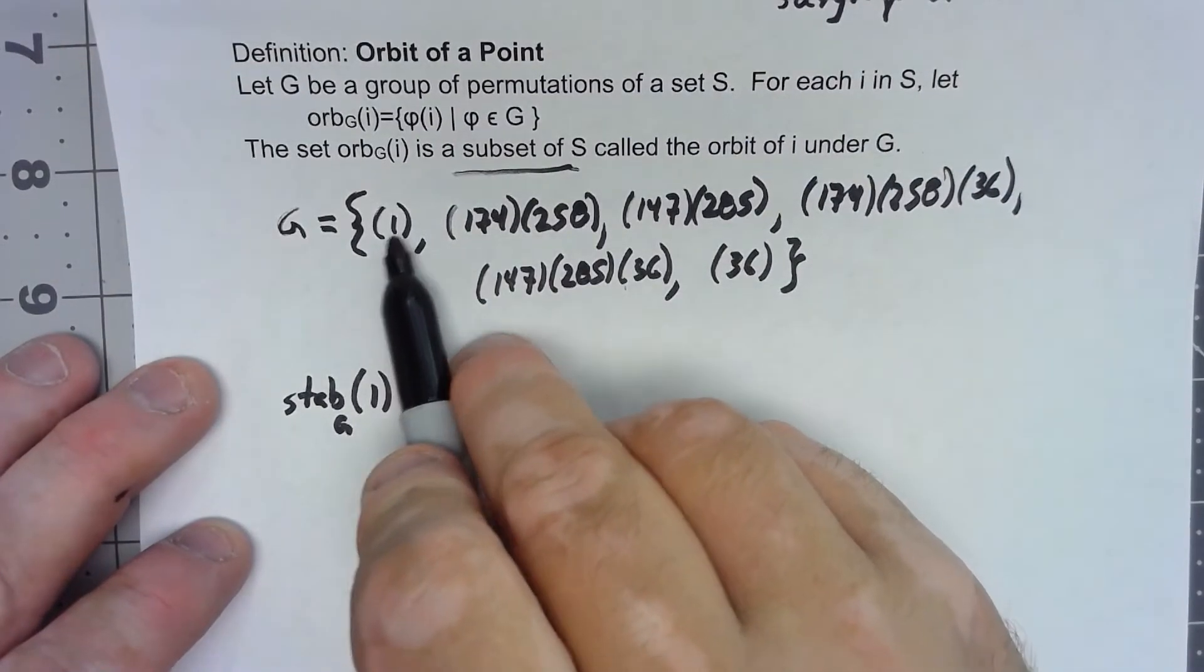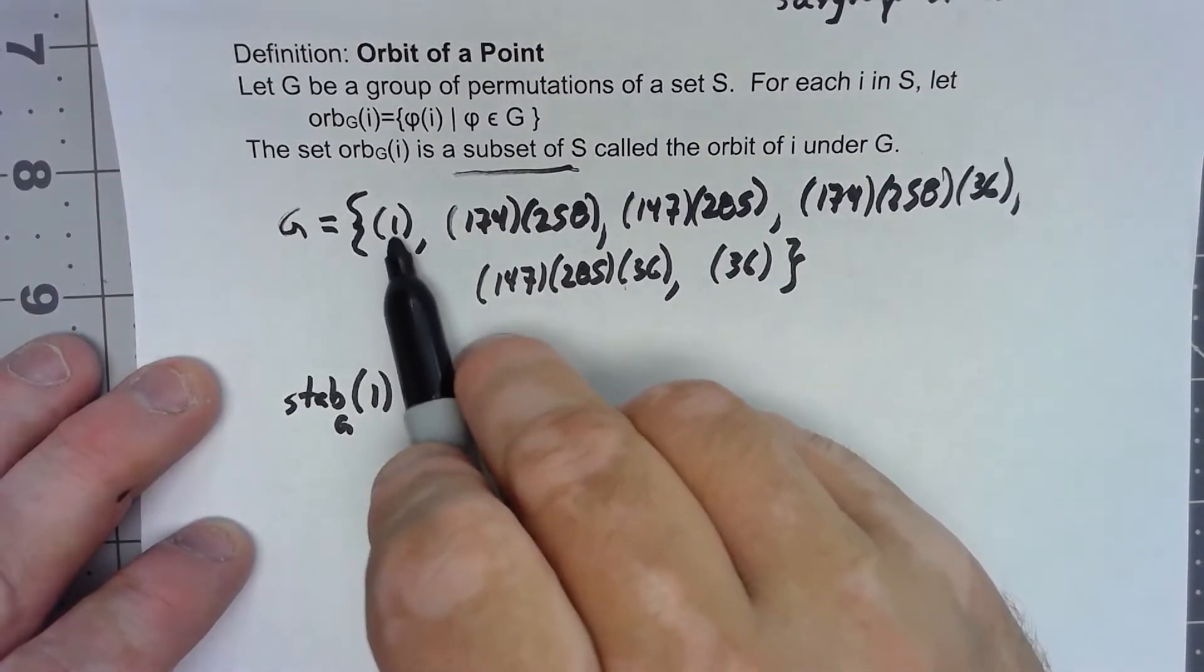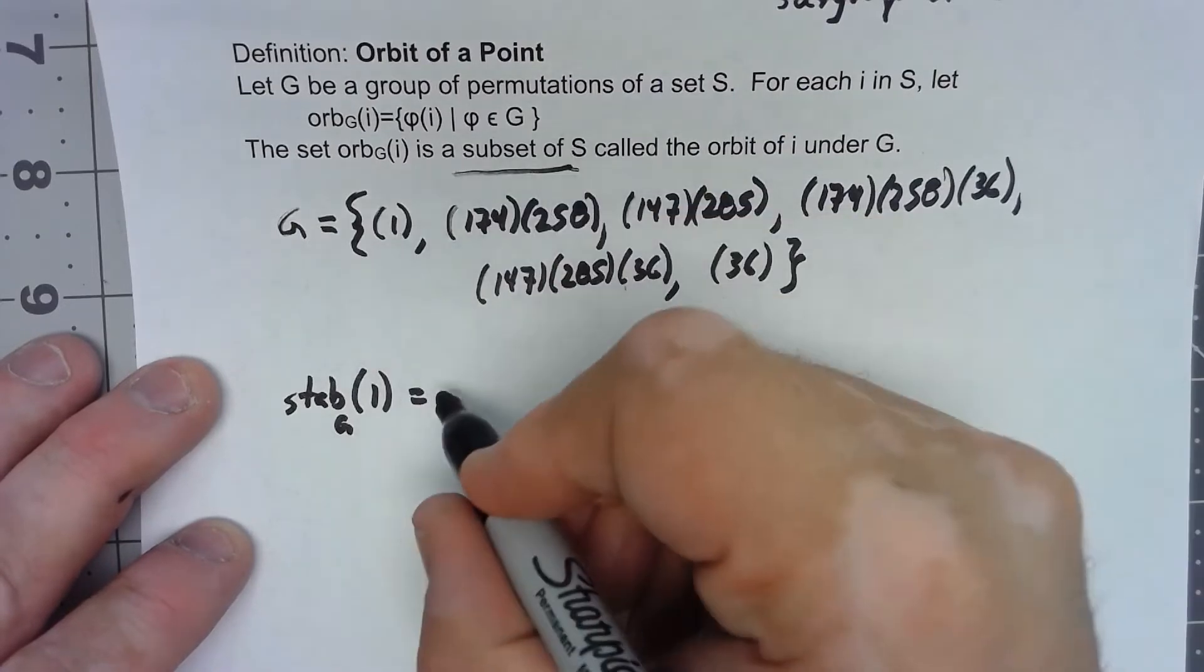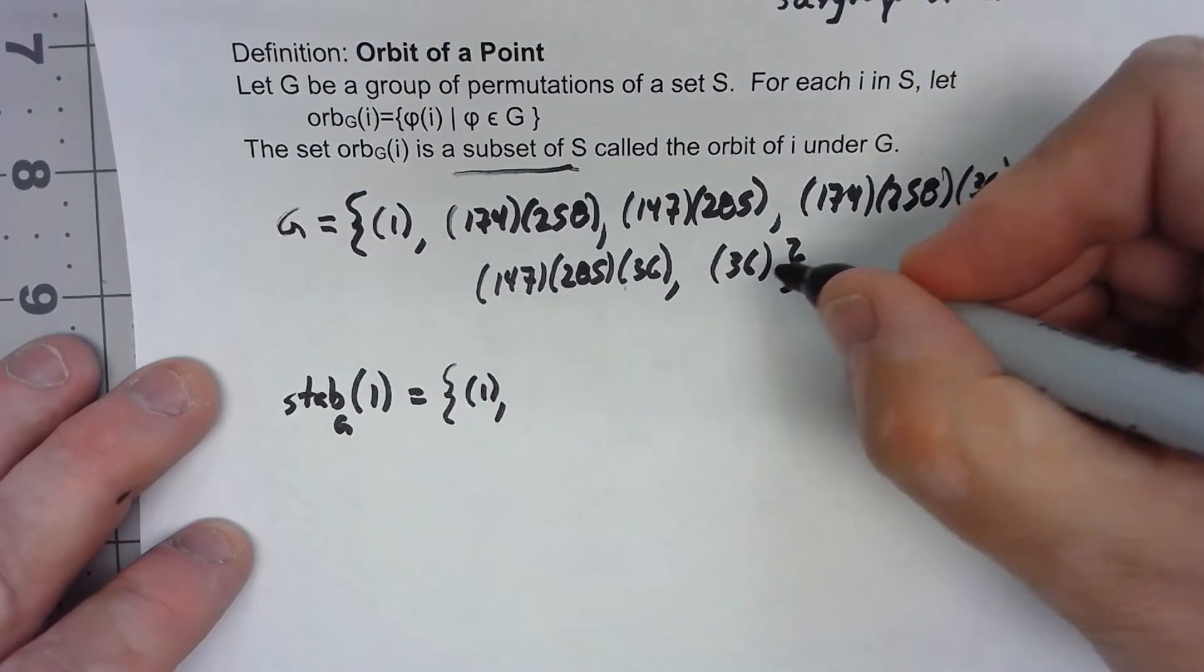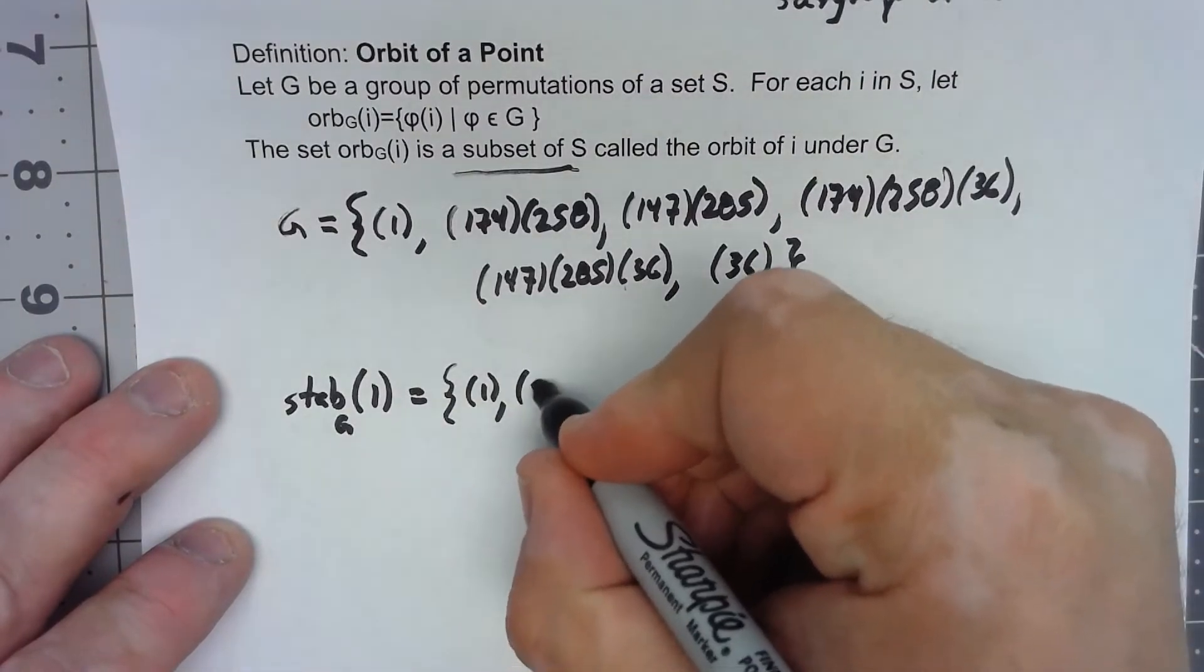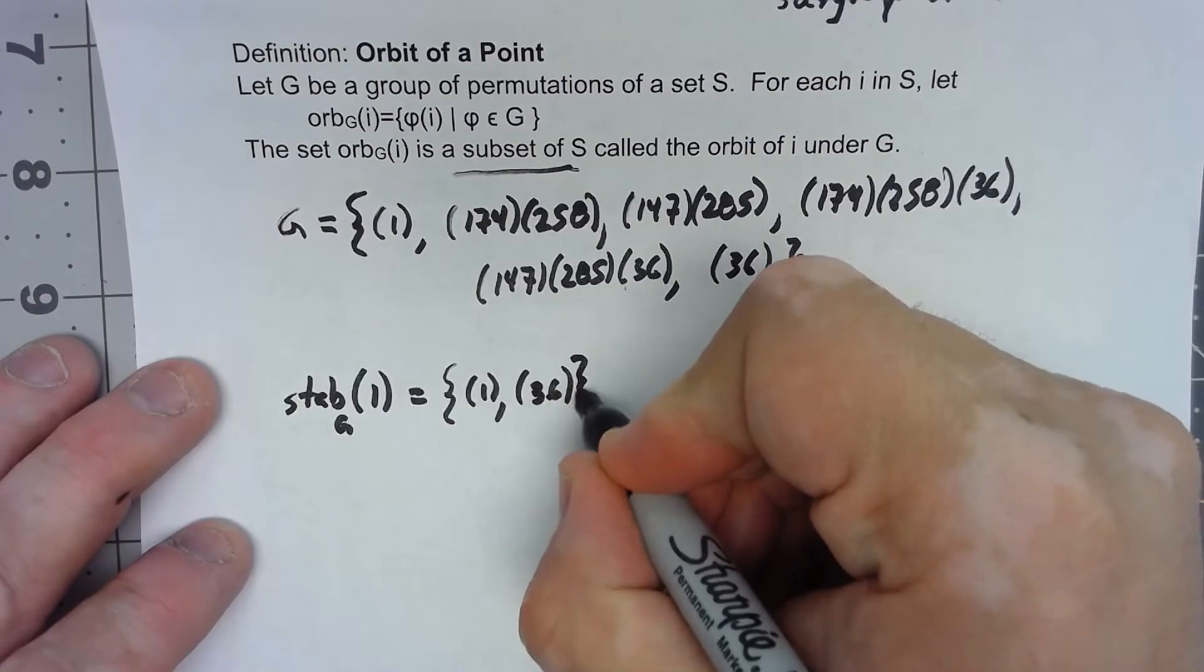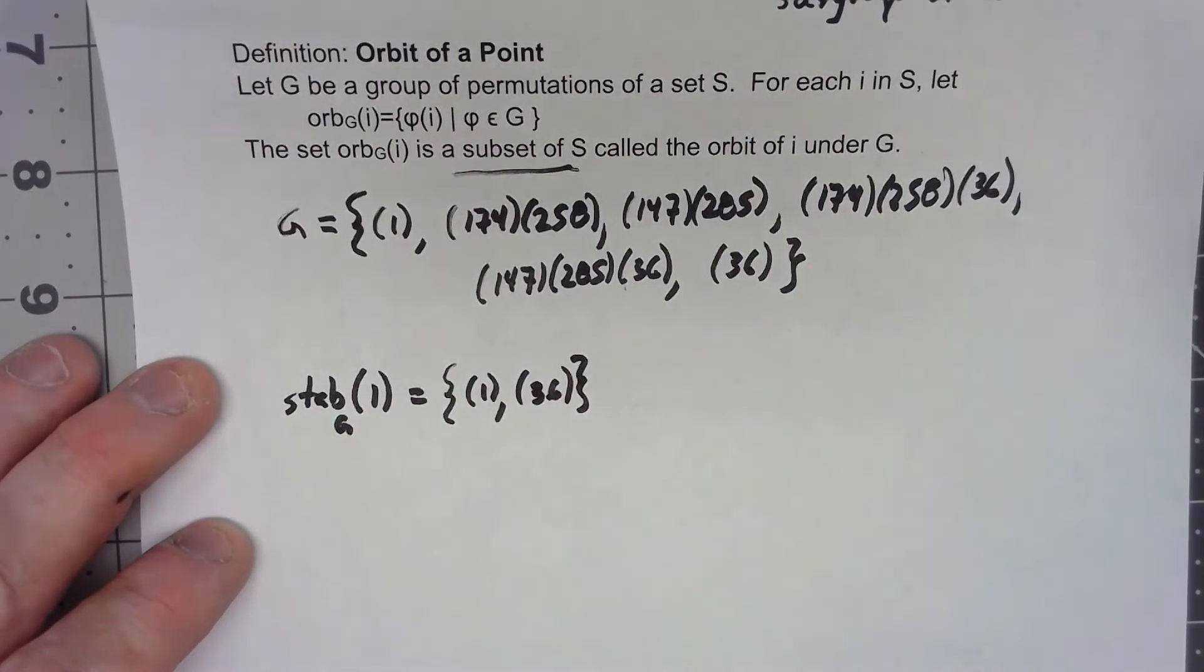But this first one, even though it's listed as a one cycle, that's really the identity, that certainly leaves one fixed. And then here, 36, that doesn't affect one. So that's the stabilizer in G of one.